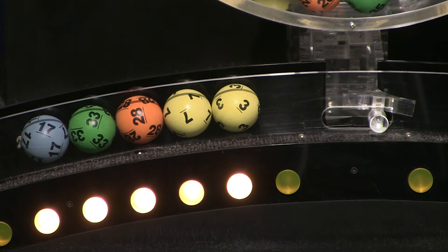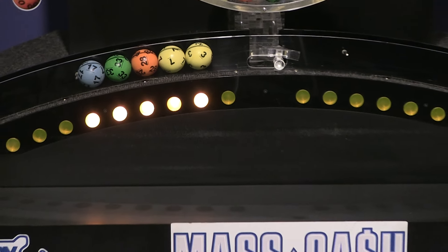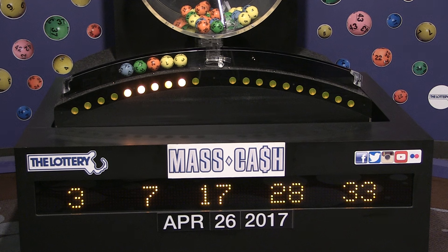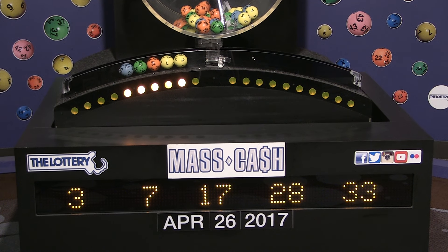Once again, the winning Mass Cash numbers for Wednesday, April 26, are 3, 7, 17, 28, and 33. We'll see you shortly for the Megabucks Double and Powerball Drawings.